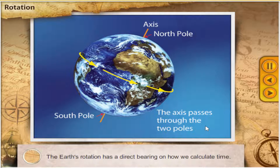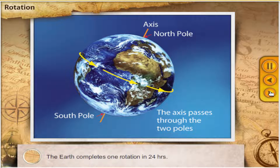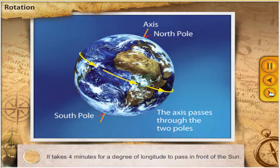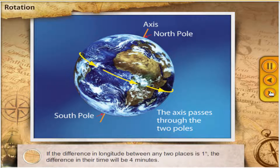The Earth's rotation has a direct bearing on how we calculate time. The Earth completes one rotation in 24 hours. It takes 4 minutes for a degree of longitude to pass in front of the Sun. If the difference in longitude between any two places is 1 degree, the difference in their time will be 4 minutes.